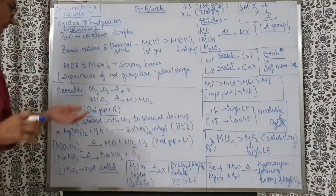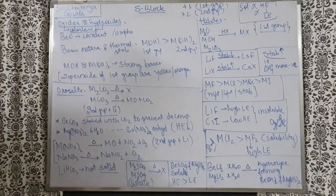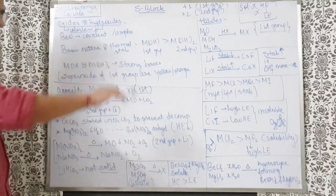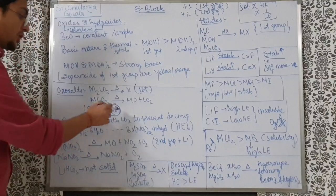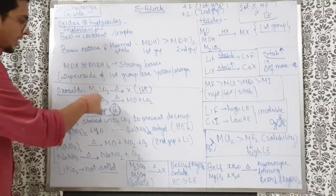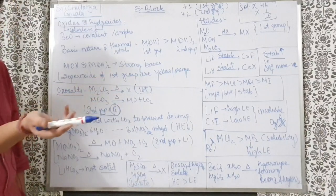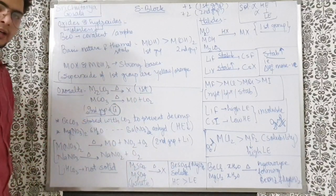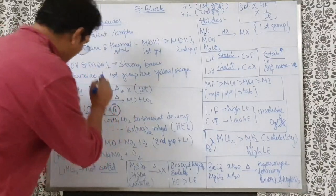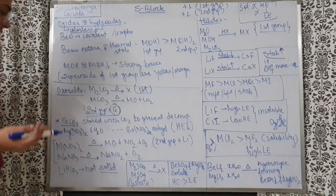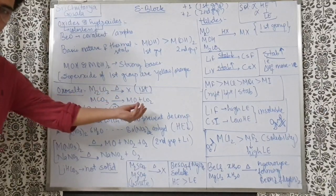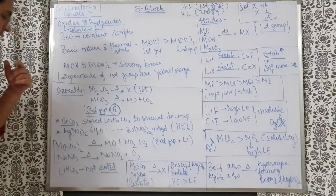For oxo-salts: Group 1 carbonates are thermally stable — sodium to cesium carbonate will not break on heating. However, Group 2 carbonates and lithium carbonate (due to its diagonal relationship with Mg) decompose on heating to form oxide and CO2. For example, CaCO3 → CaO + CO2, and Li2CO3 → Li2O + CO2. Beryllium carbonate is so unstable it must be stored with CO2 to prevent decomposition.